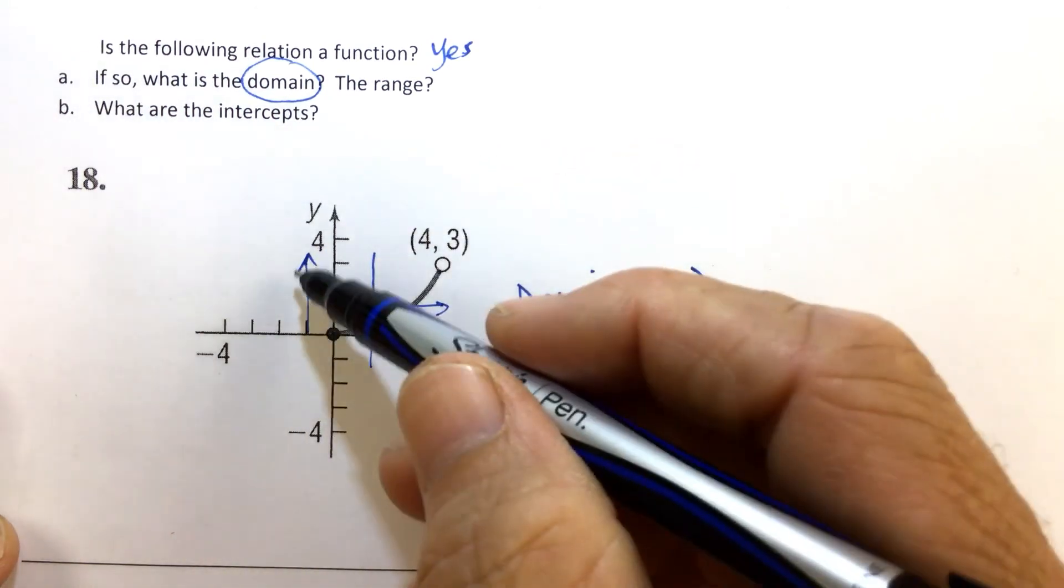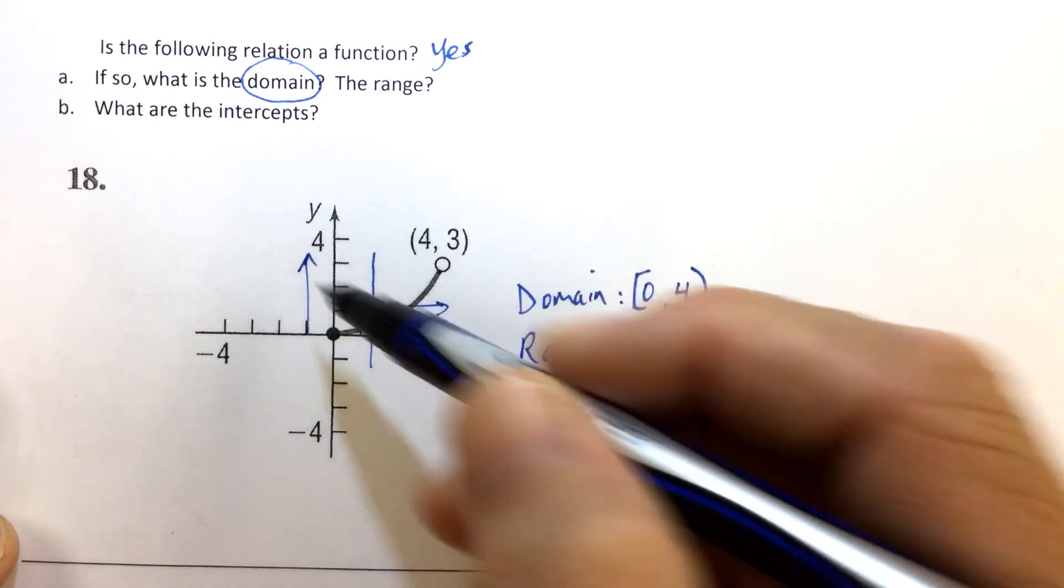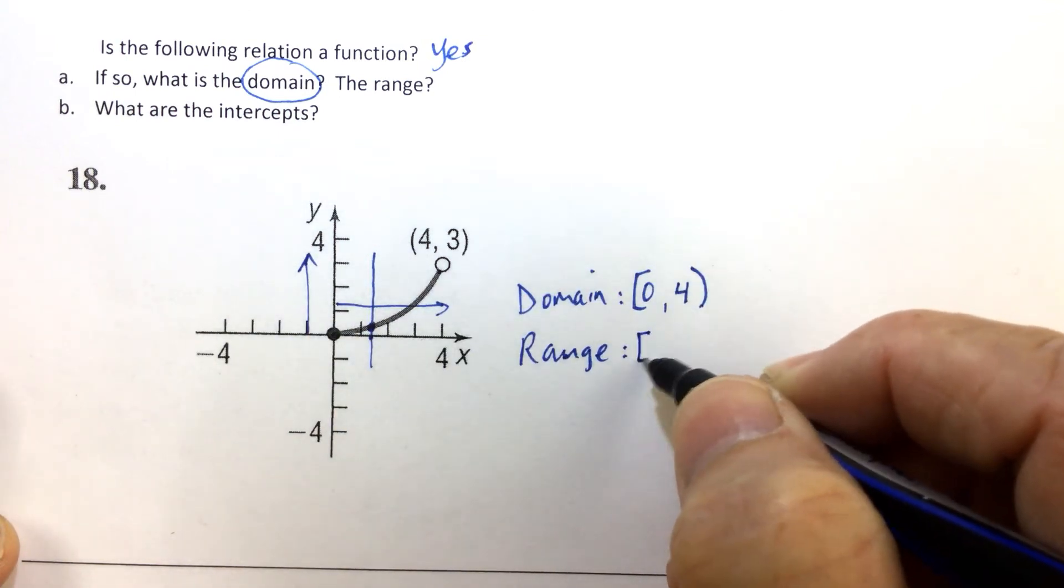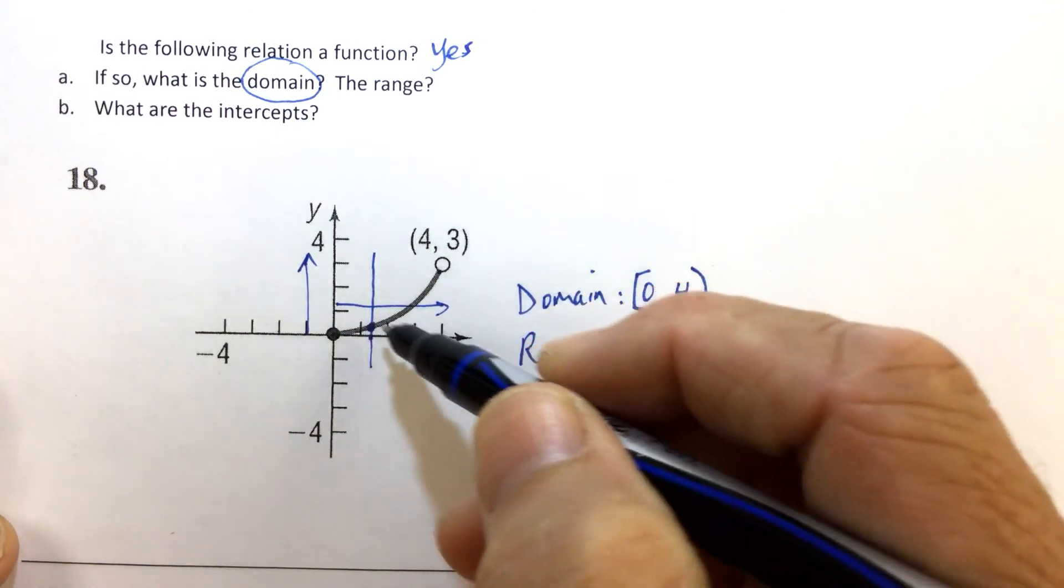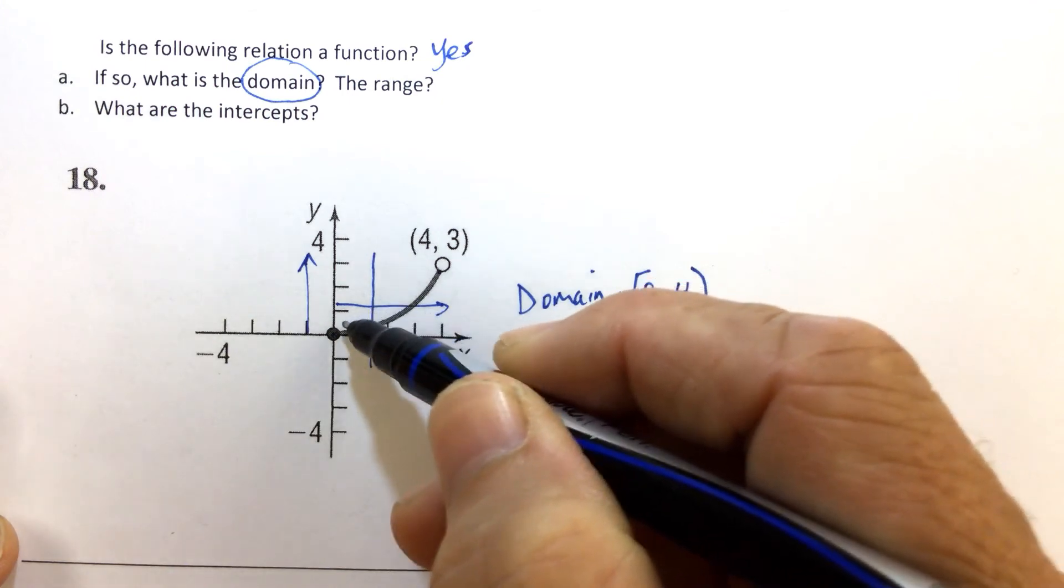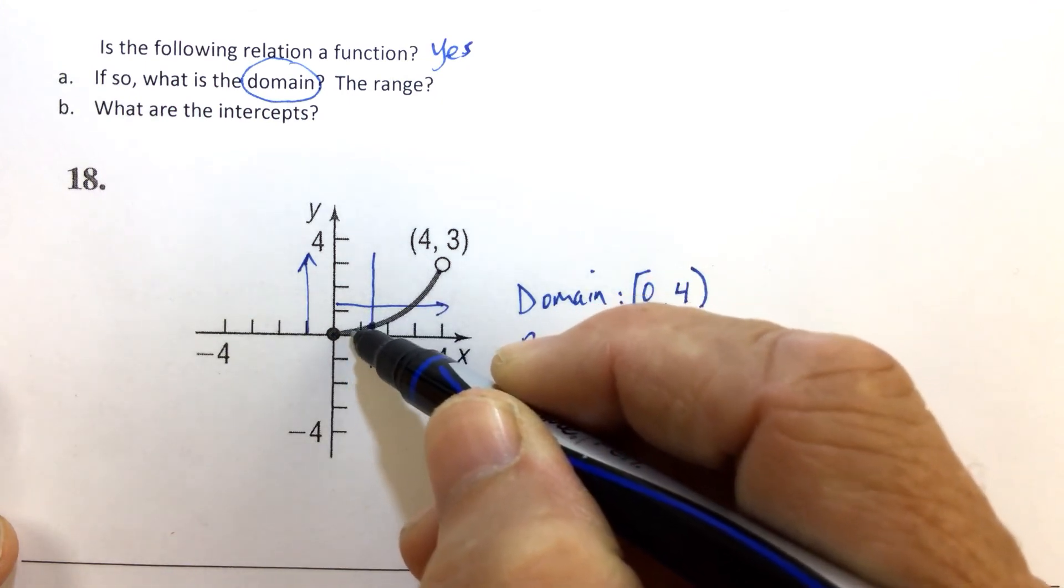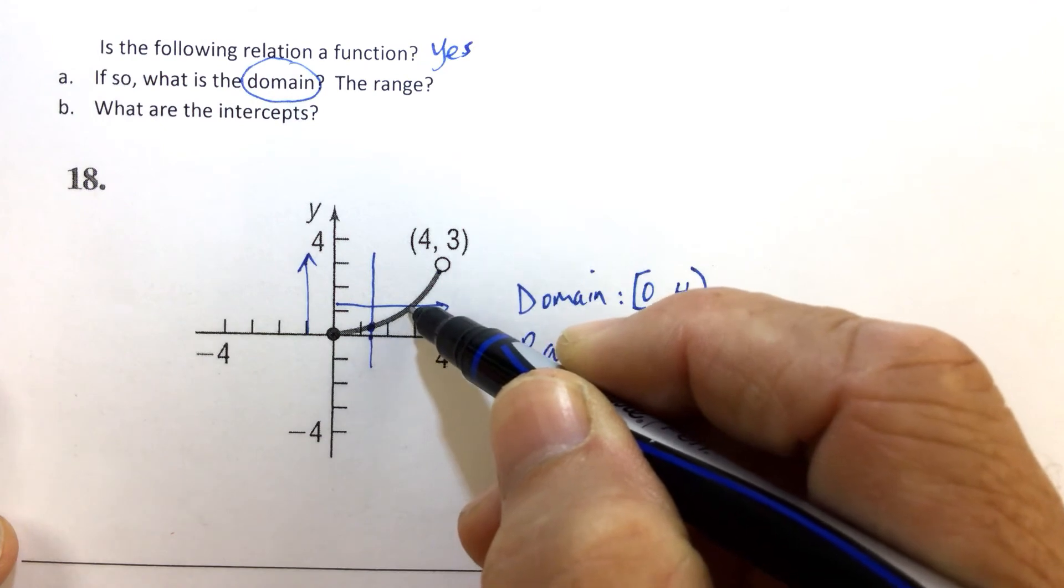When we want to find the range, we go from bottom to top. So the lowest y-value is 0. If we keep going up and keep looking over, there's a y-value of 0.1, 0.2, all the way to 1, and then 2,